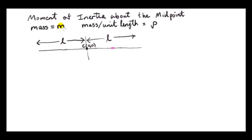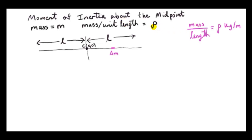Suppose the mass of the rod is M. Since we will be considering tiny mass elements δm, we need the density of the rod. Normally density is mass over volume, but since it's meaningless to talk about volume for a one-dimensional rod, we use mass per unit length. That quantity is fixed for a uniform rod, and we call it ρ (the Greek letter rho). So ρ is in kilograms per meter — mass per unit length rather than mass per unit volume.